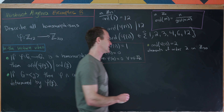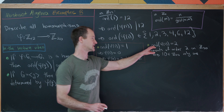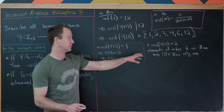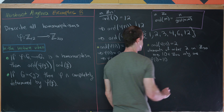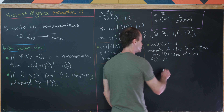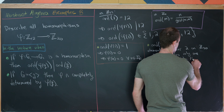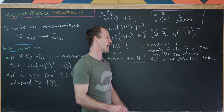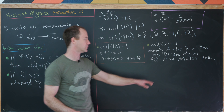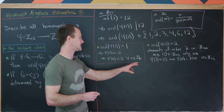So 10 in Z20 is the only element of order 2. Since we've decided to send 1 to an element of order 2, and 10 is the only such element, we have φ(1) = 10. In general, φ(n) = 10n for all n in Z12, applying the fact that we're inside a cyclic group and n can be written as 1+1+1 n times. So that's our second homomorphism.